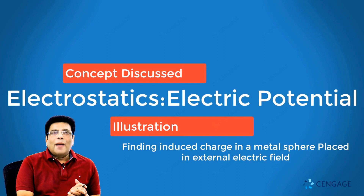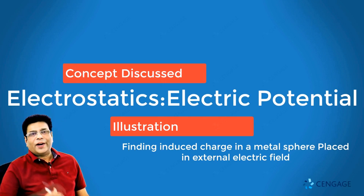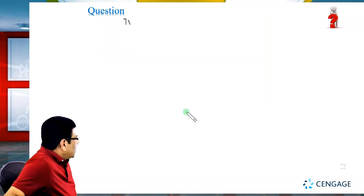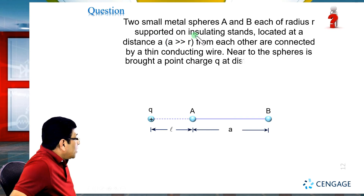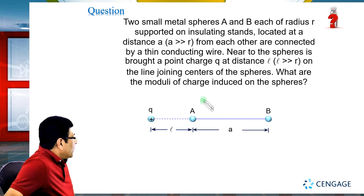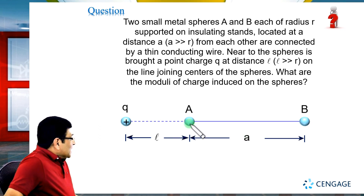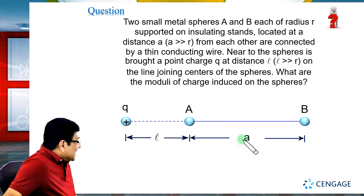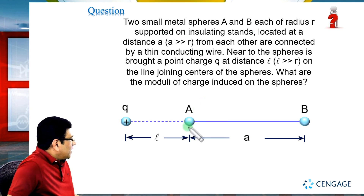Through the next illustration we are going to discuss an application of a very important concept of electrostatics. Here we will learn calculating induced charge on a metal sphere placed in an external electric field. We are given two small metal spheres A and B, each of radius r, supported on insulating strands, located at a distance a (where a >> r) from each other and connected by a thin conducting wire. They are not connected to the earth.